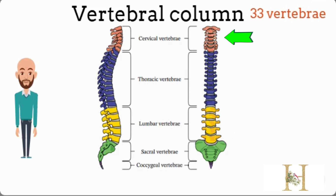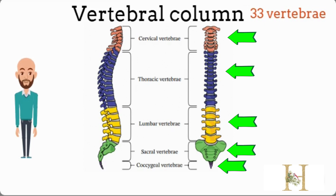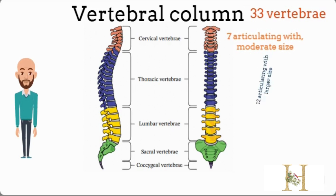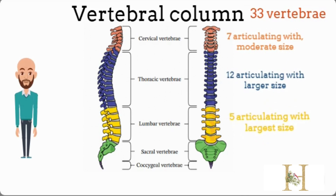The vertebral column is composed of 33 vertebrae divided into: seven cervical, 12 thoracic, five lumbar, five sacral, and four coccygeal. Cervical vertebrae are located in the neck region and are articulating vertebrae of moderate size. Thoracic vertebrae are also articulating, with larger size than cervical, located in the thorax. Lumbar are the largest vertebrae, present in the abdominal region, and also articulating. Sacral vertebrae are fused and flat.